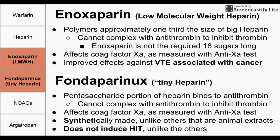The next drug is fondaparinux, which I call tiny heparin. Tiny heparin is essentially just the five sugars required to bind to antithrombin. This smaller version of heparin cannot form a complex with antithrombin to inhibit thrombin, but it can activate antithrombin enough to affect coagulation factor Xa. We use the anti-Xa test to measure that. Fondaparinux is synthetically made, whereas the other heparin molecules are produced from animal extracts, usually from pig intestines. Because it's synthetic, fondaparinux does not induce heparin-induced thrombocytopenia, unlike enoxaparin and unfractionated heparin.